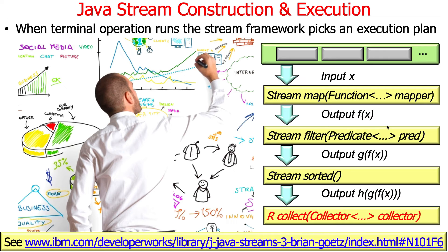You're building up this linked list, and then at runtime, nothing actually happens until the terminal operation is run. When the terminal operation is run, it triggers something called an execution plan — similar to a SQL query optimizer where you write a query, it optimizes it, and then runs it on the optimized version. The execution plan is picked based on the properties of the source, like the collection, and all those aggregate operations.